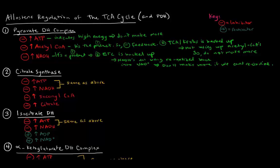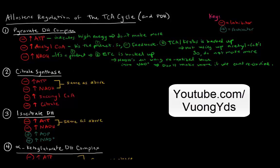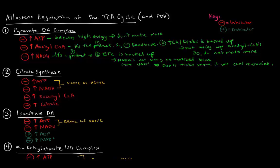For citrate synthase, the first two allosteric inhibitors are high ATP and high NADH — essentially for the same reasons as the pyruvate dehydrogenase complex. One thing to note is that citrate synthase is the first committed step of the pathway, so we want to make sure this is only occurring if we really need to commit to this pathway.